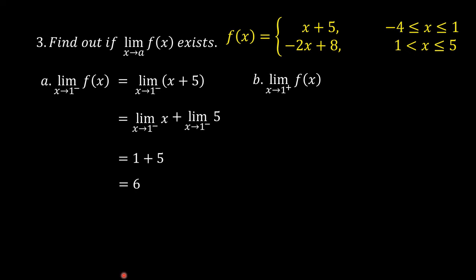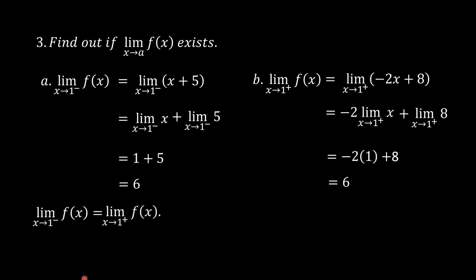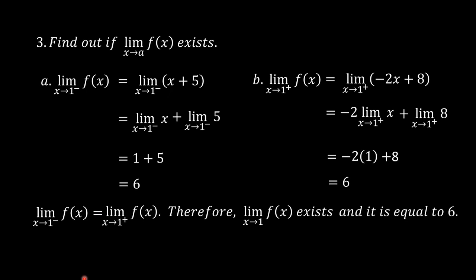The limit of f of x as x approaches 1 from the right equals the limit of negative 2x plus 8 as x approaches 1 from the right. This equals negative 2 times 1 plus 8, which is 6. Since the left-hand limit equals the right-hand limit, the limit of f of x as x approaches 1 exists and equals 6.